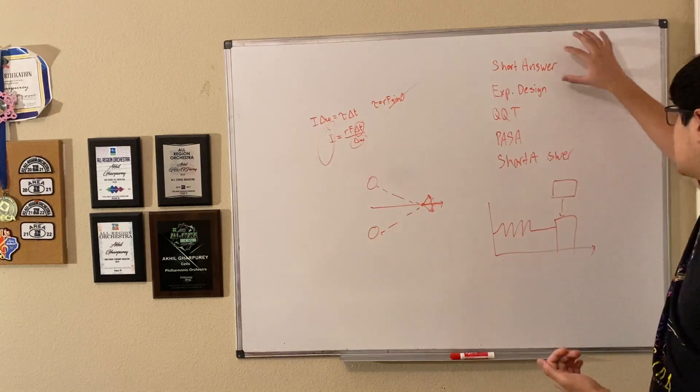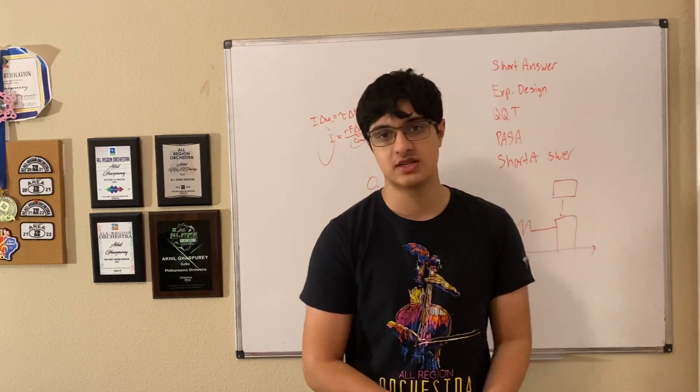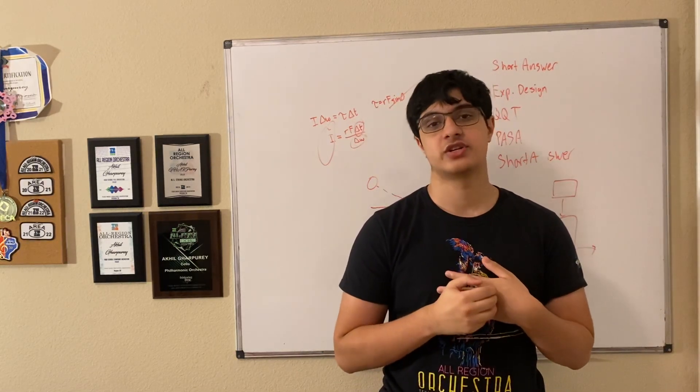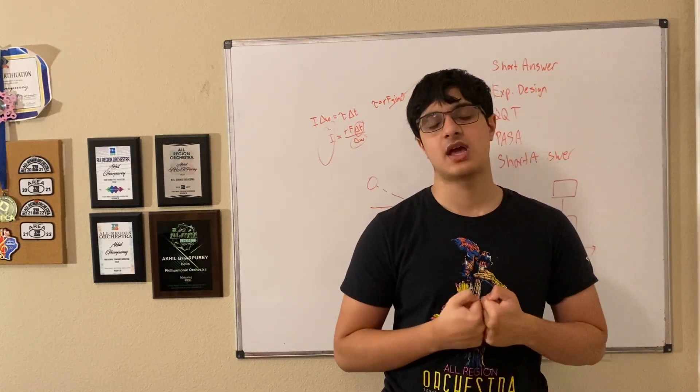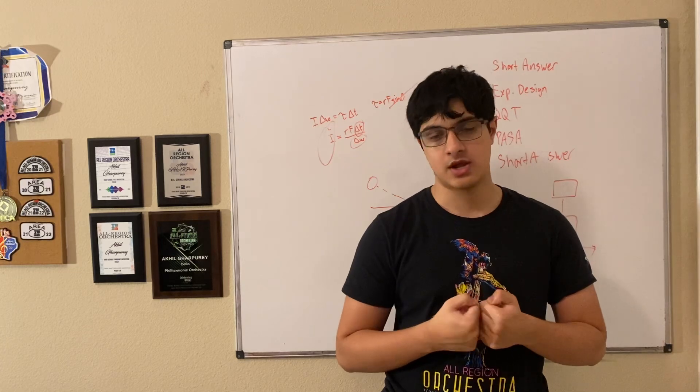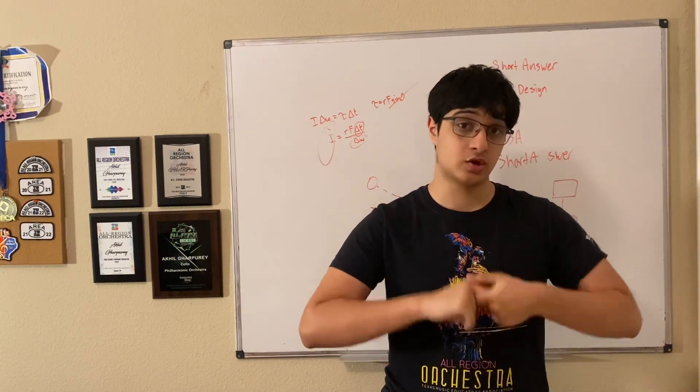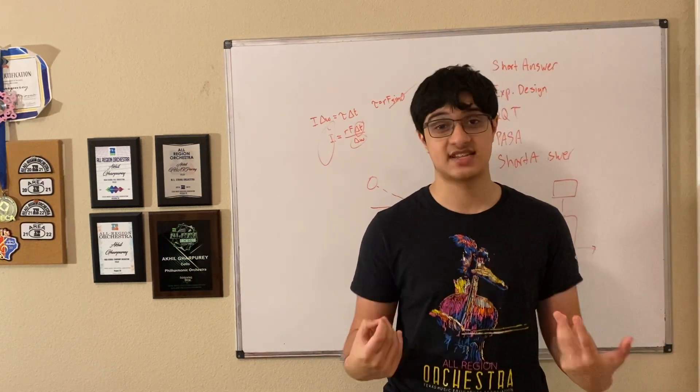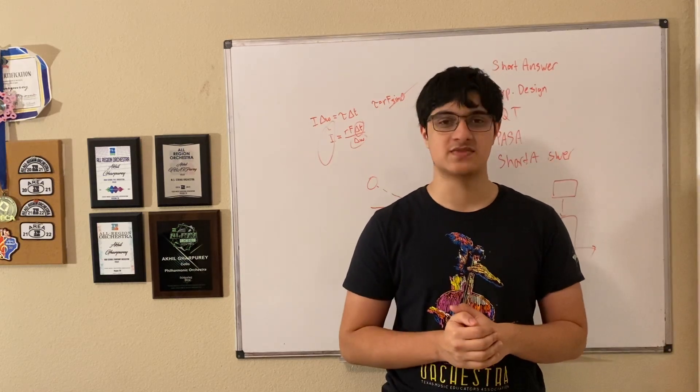But with that, if you apply all those tips, practice, do well on the MC, practice on MC as much as you possibly can, you will be in good condition to get a 5. I promise. But yeah, this is my advice to get a 5 on AP Physics 1. I hope you use it, and I hope that you get a five. Good luck and happy testing. Well, not really happy testing, but like, testing. You'll get a 5, I promise. But yeah, that concludes this video. Thank you.